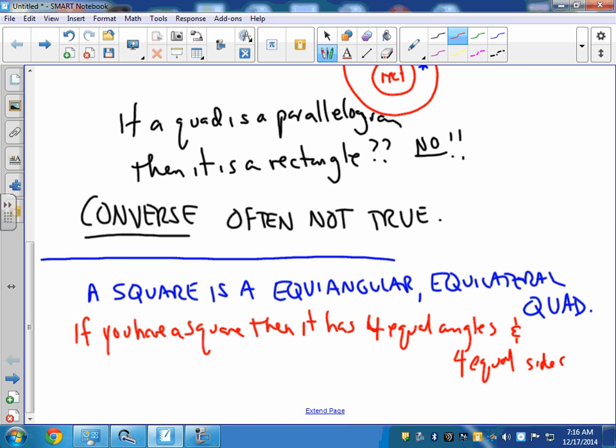The converse would be, of course, if you have something that has four equal angles and four equal sides, then it has to be a square. And sure enough, that's true as well.